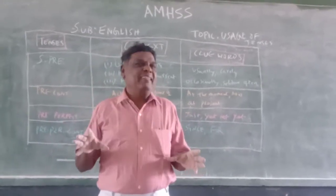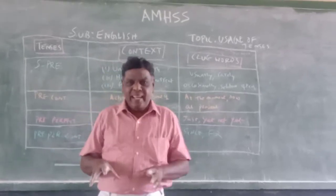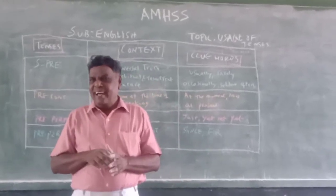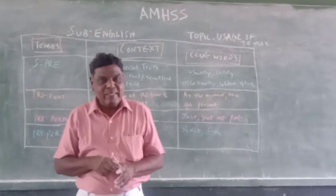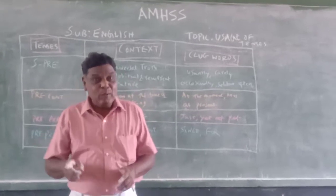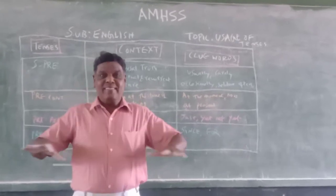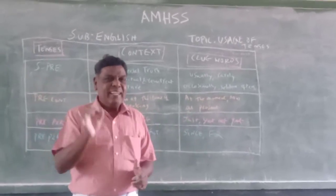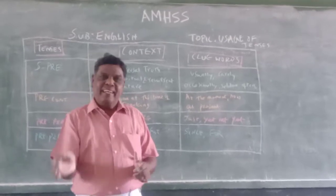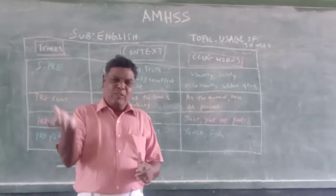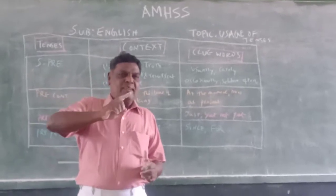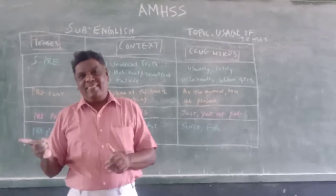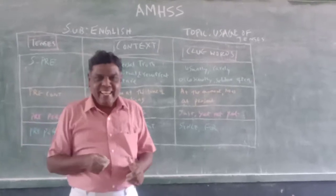How many tenses are there? Today we are going to discuss how to use them, where to use them, all these tenses. There are 12 tenses in English. Every tense has its own meaning. You cannot overlap one tense into another tense — it is the same in English.